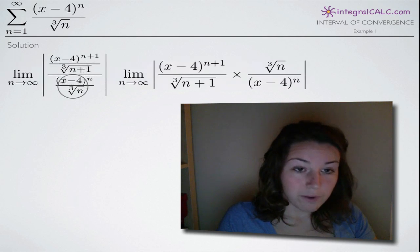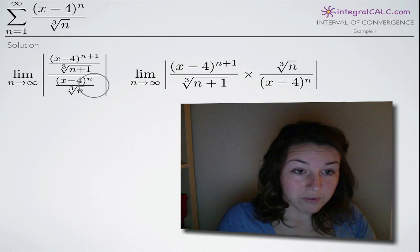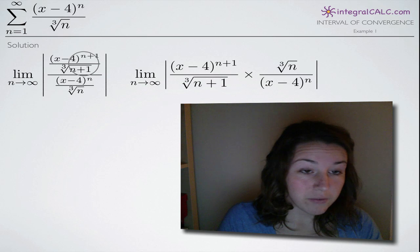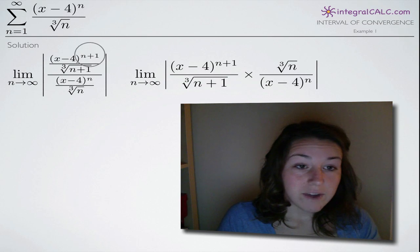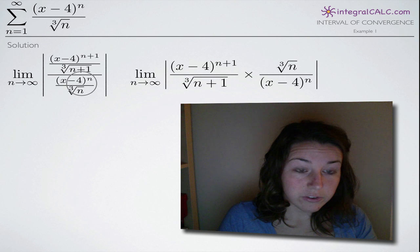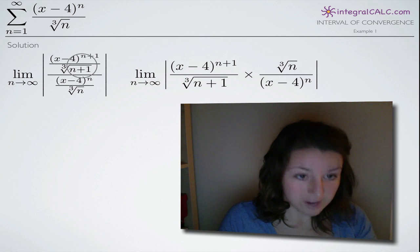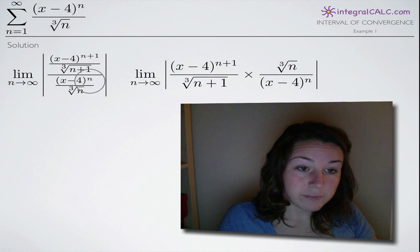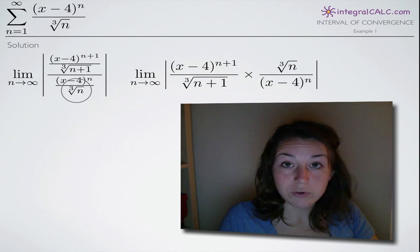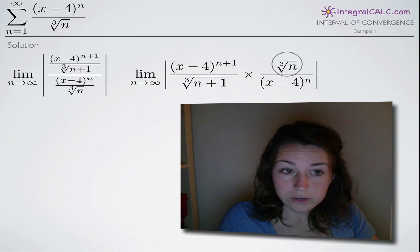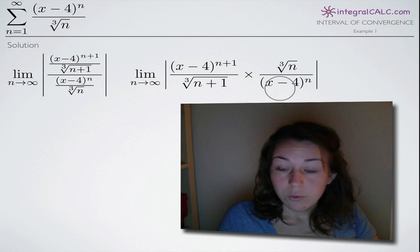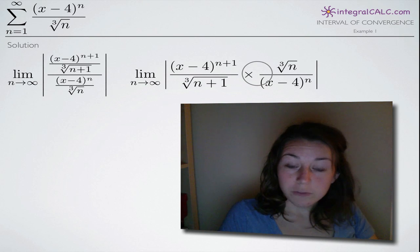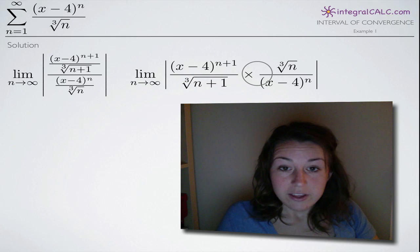We write that out and start simplifying. Instead of dividing this big fraction by this big fraction, we multiply the top fraction by the inverse of the bottom fraction. So we flip the bottom fraction upside down — the cube root of n goes to the numerator and the (x minus 4) to the n goes to the denominator — and now we're multiplying instead of dividing.